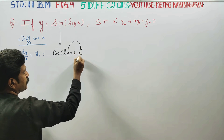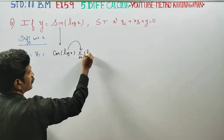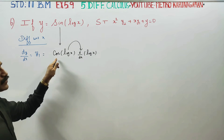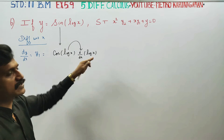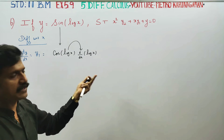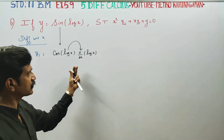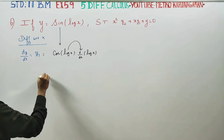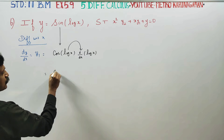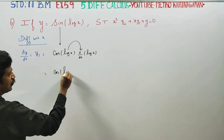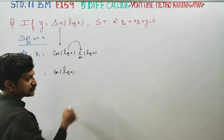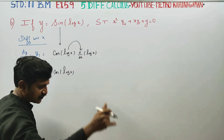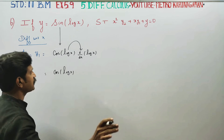Now, d/dx of log x. If you have sin, you can differentiate with log x. Next, cos(log x). Now, log differentiate. The derivative of log x is 1/x.